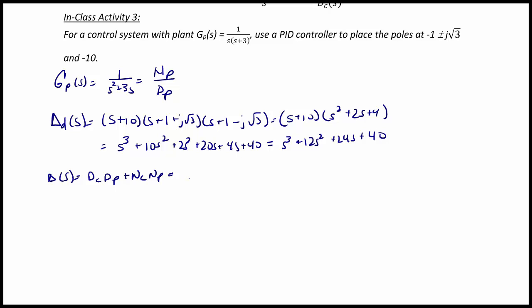So that's going to be s times s squared plus 3s plus kd s squared plus kp s plus ki times 1.